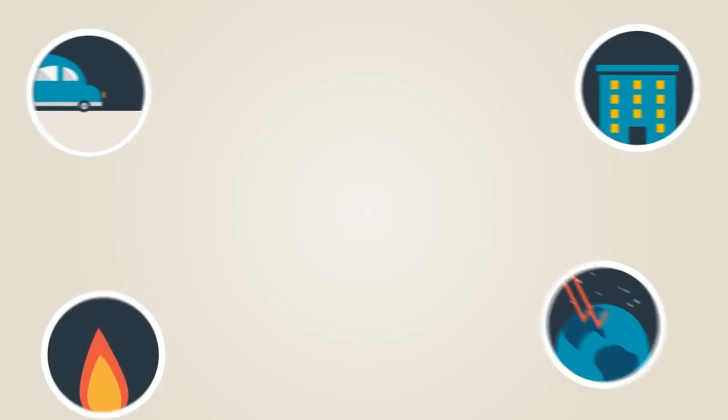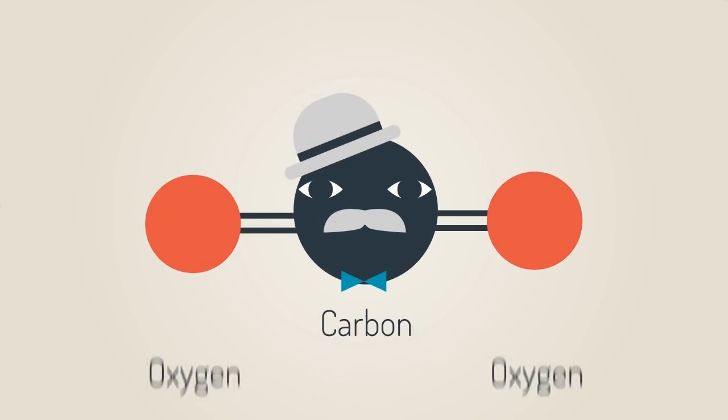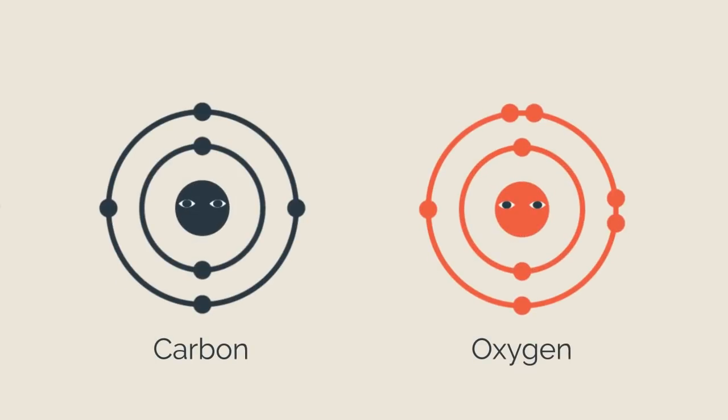The carbon dioxide molecule is formed from one carbon atom and two oxygens. Now both these elements are in row two of the periodic table and have two electron shells.